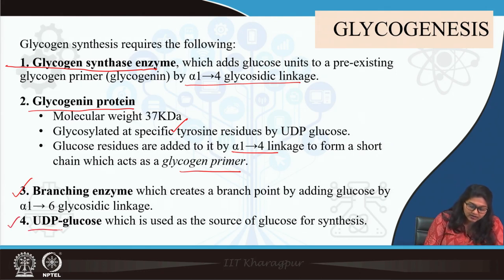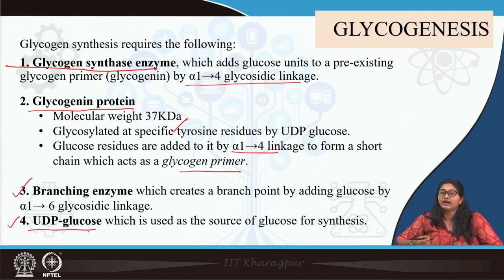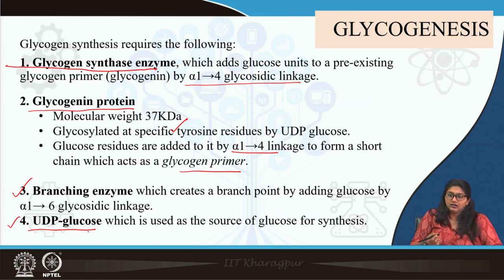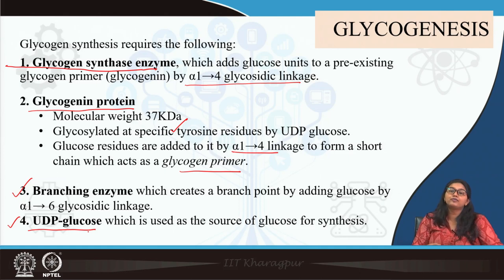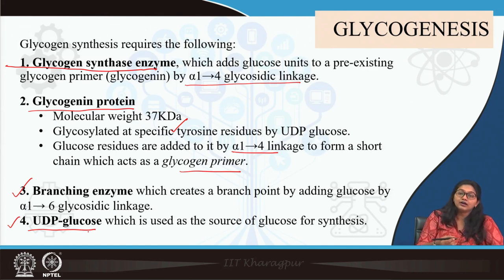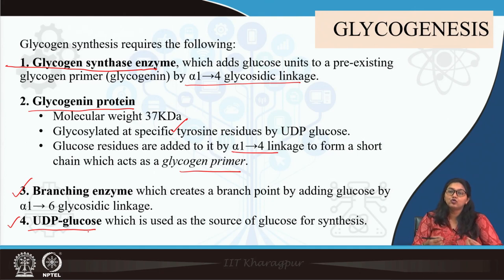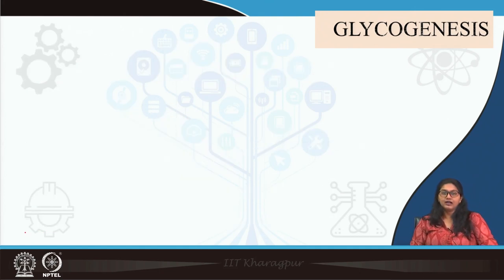Another important molecule is UDP-glucose. Remember, carbohydrate monosaccharides cannot directly take part in glucose transfer or other chemical reactions — they should be activated by adding some nucleotides. Here, glucose is activated by forming UDP-glucose by addition of UDP.